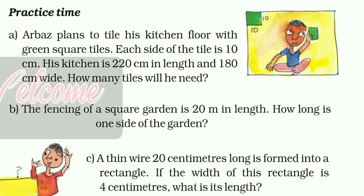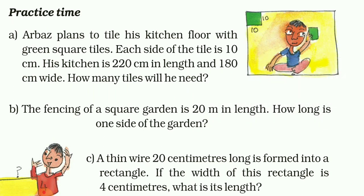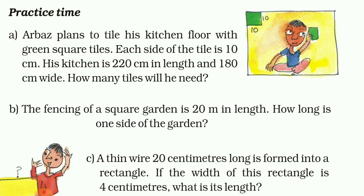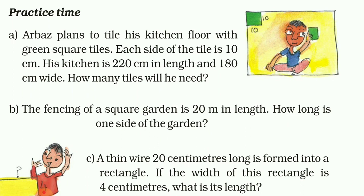Hello dear students and welcome back to this online class video. This is the second part of chapter 11, 'Area and its Boundary' of class 5 mathematics. I am Jay Prakash. Today's topic is practice time, where we will solve questions based on finding the length of one side of a square or rectangle, their areas, and their perimeters.